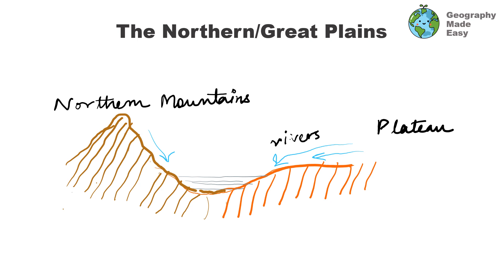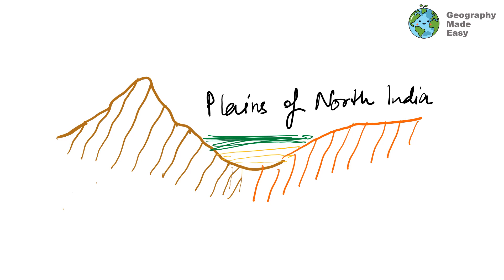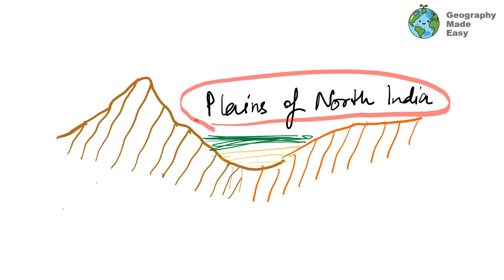Last but not the least, we have the Northern or the Great Plains. The Northern Plains are flanked by the Deccan Plateau on the south and by the Himalayas on the north. It is a shallow depression where sediments get deposited over time as rivers erode the plateau and the mountains. Over time, the sediments keep accumulating, forming the Northern Plains. Comparatively, the geology of the plains is simpler to understand — the shallow area has been filled up with sediment, forming a plain.